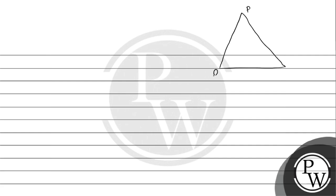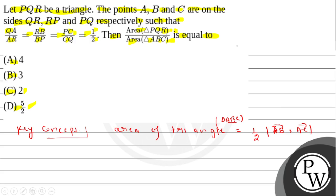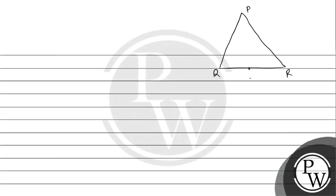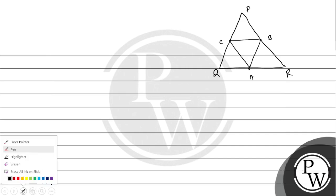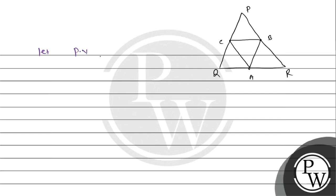Let's draw triangle PQR. Here is point P, this is Q, and this is R. Point A is on side QR, point B is on side RP, and point C is on side PQ. Triangle ABC is formed. Let the position vector of P be 0 vector, position vector of Q be vector a, and position vector of R be vector b.